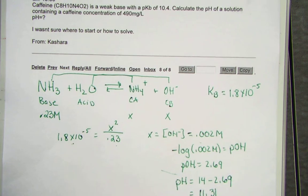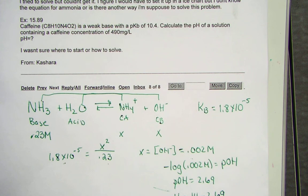The other question I was asked to work was number 89 on chapter 15. Caffeine is a weak base. It's giving us a pKB of 10.4. We're asked to calculate the pH of the solution containing a caffeine concentration of 490 milligrams per liter. What would the pH be?